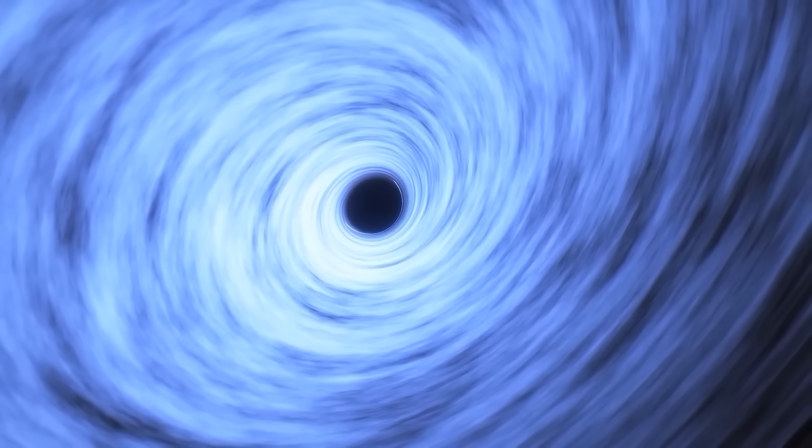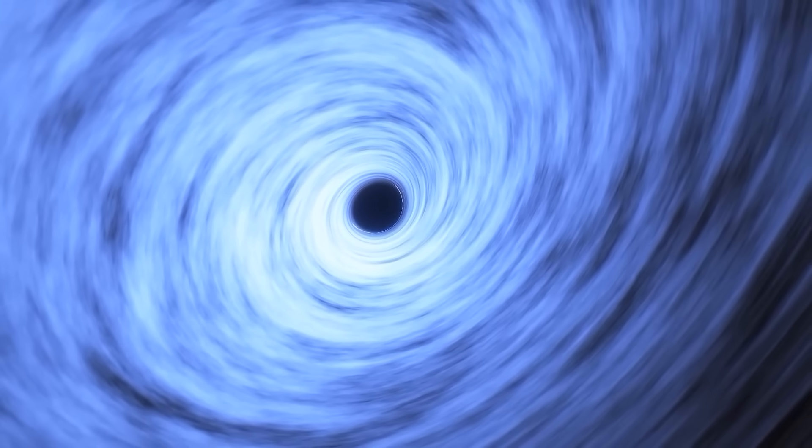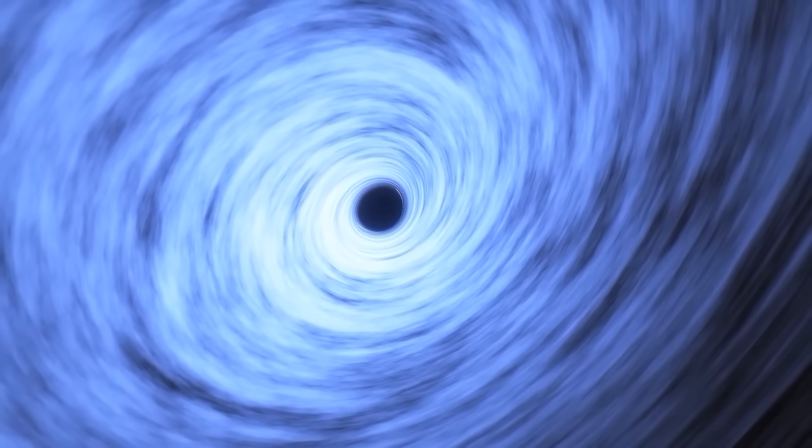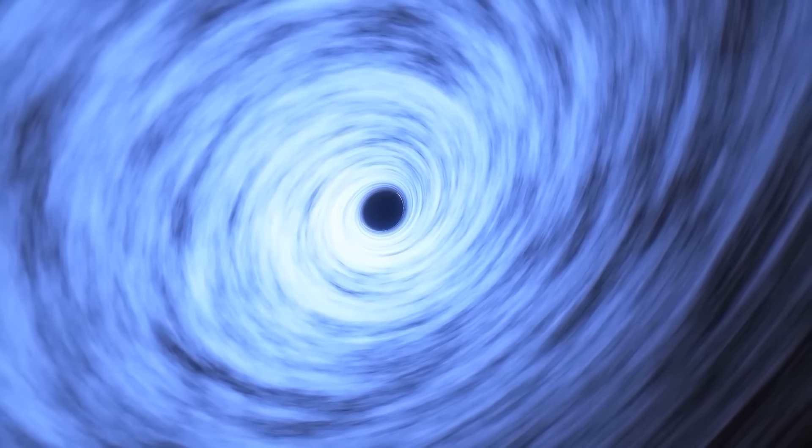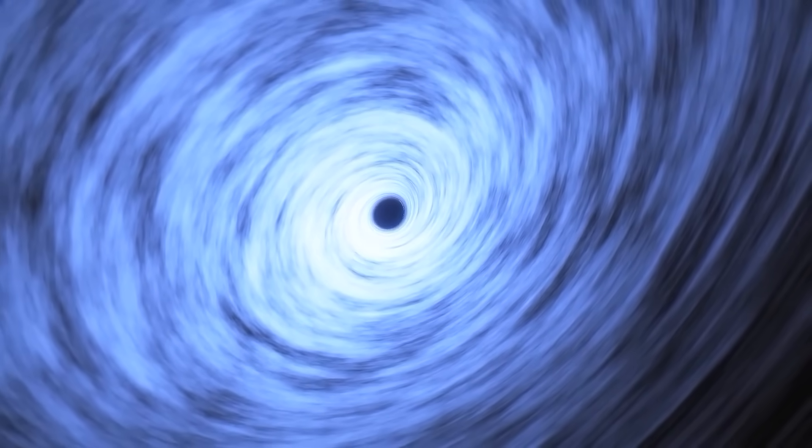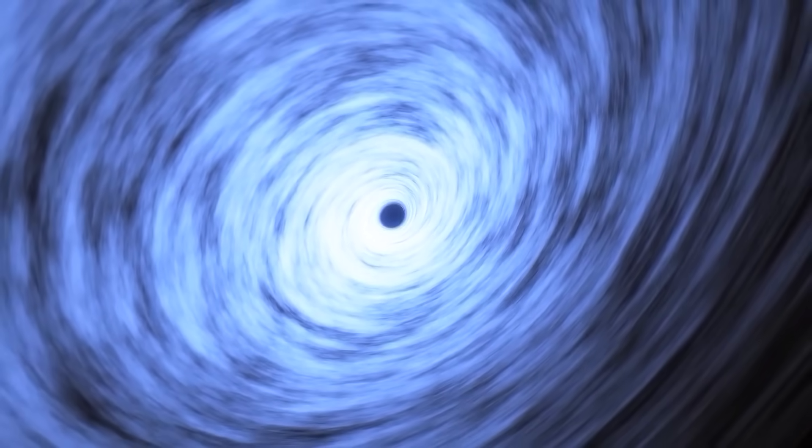This process, known as AGN feedback, occurs when the black hole accretes gas and dust from its surroundings, releasing powerful jets of energy that can affect the surrounding gas and dust.